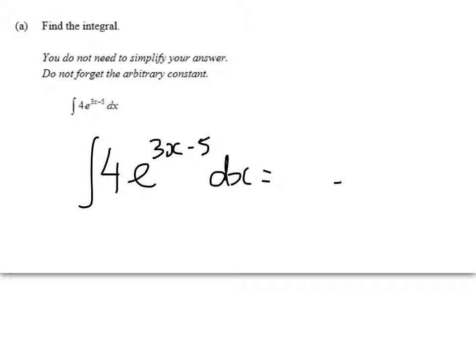So it's going to be e to the power of 3x minus 5 times something here, plus c. When I differentiate this, it's going to give me a derivative of the inside function of 3. So we need to get rid of that and we'll have 4 times that. So that's our answer there.